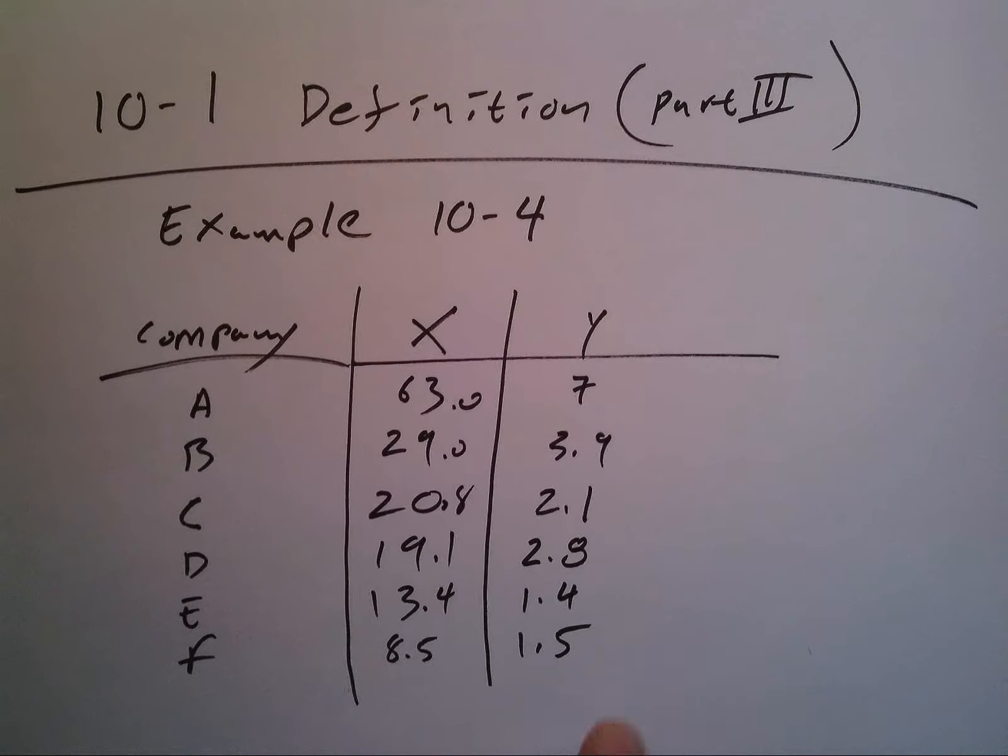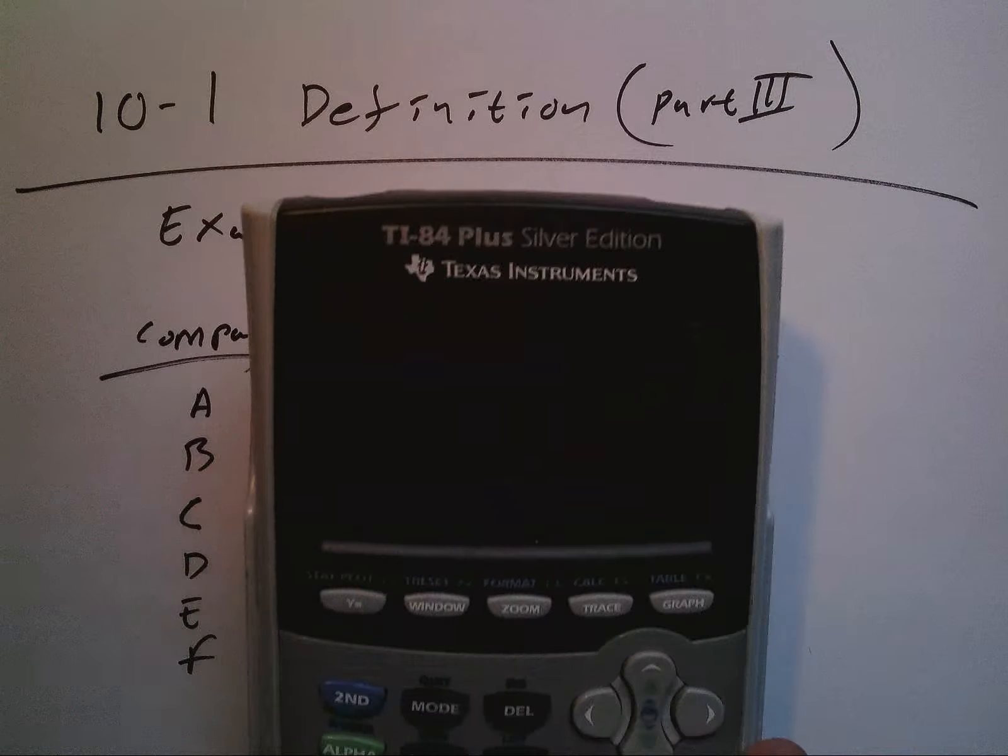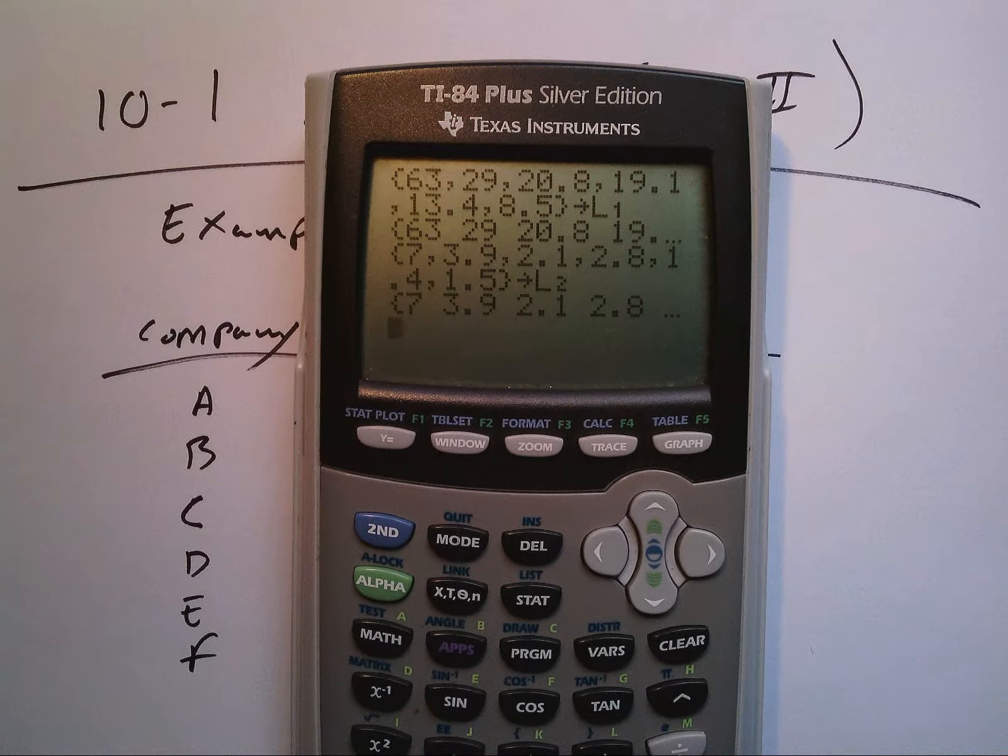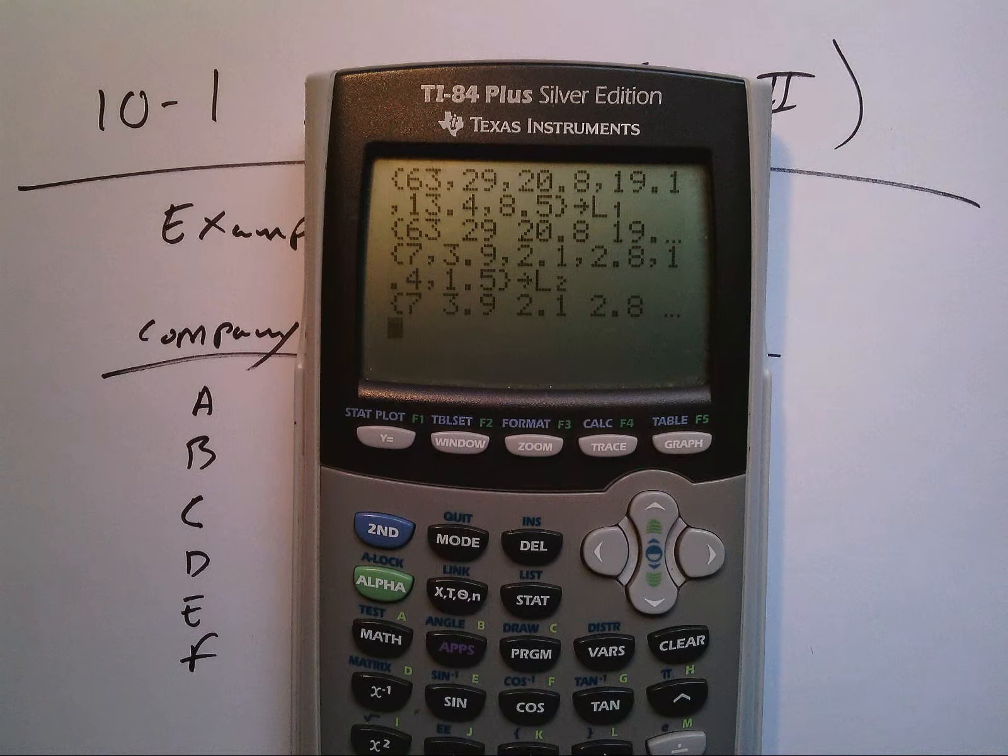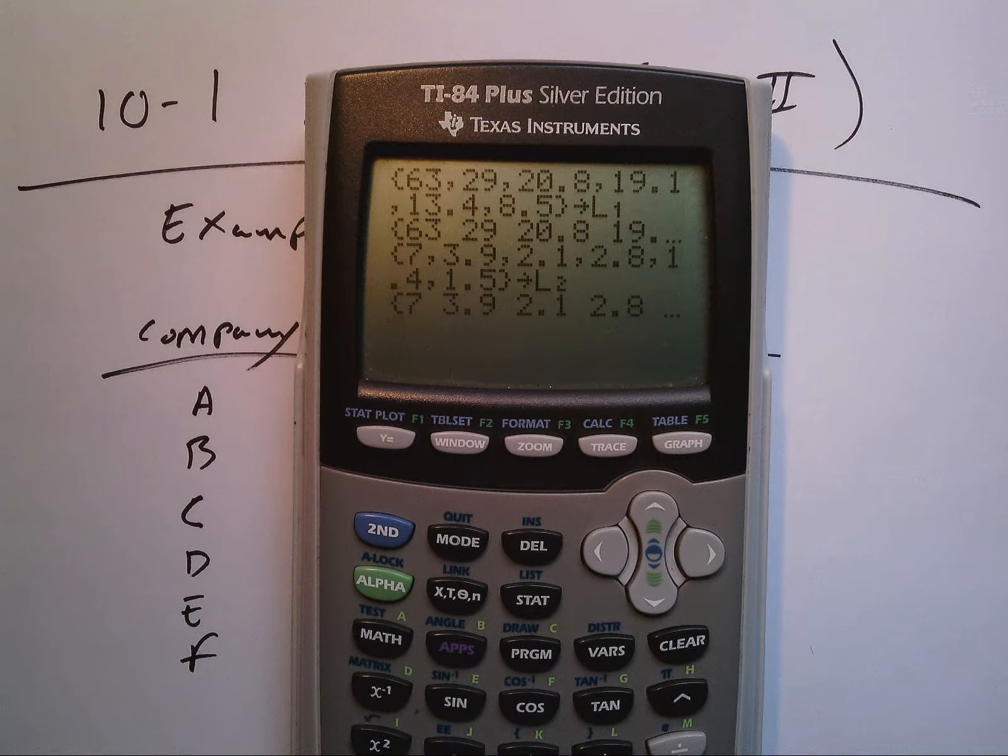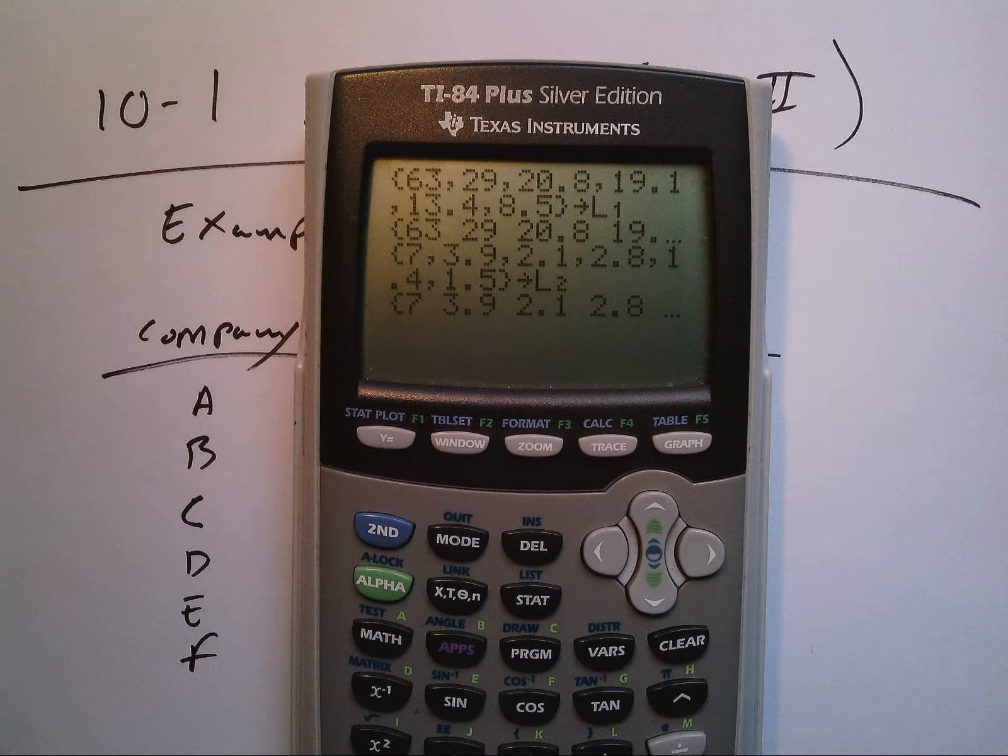I'm now going to store them onto my calculator, which I've already done. Now in 10.4, they want you to calculate the r value, the correlation coefficient.